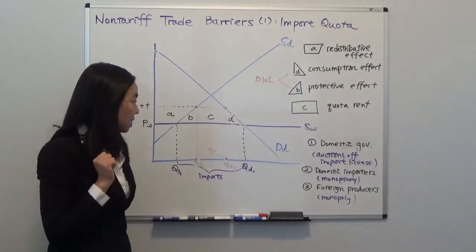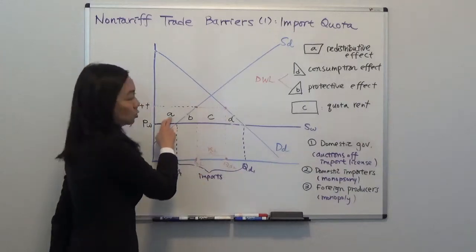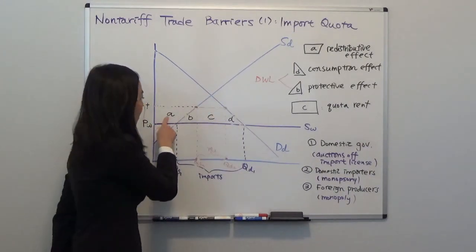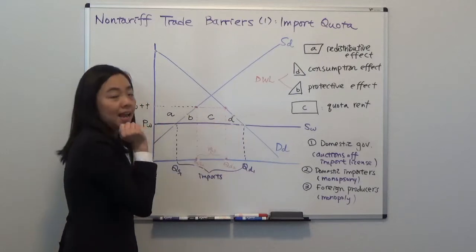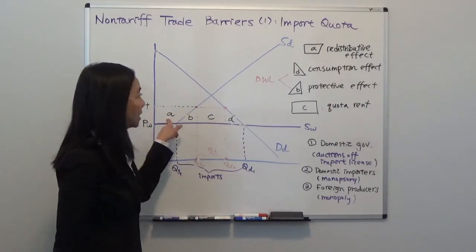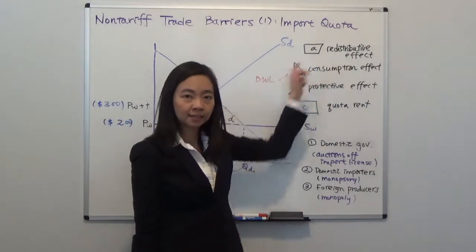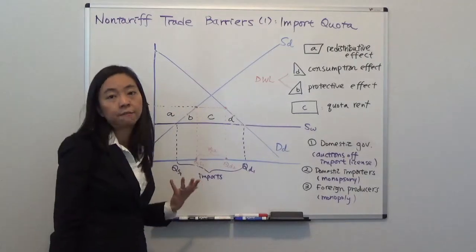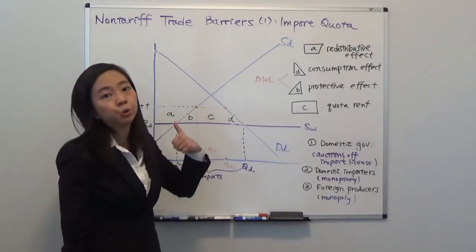And we can cut the lost consumer surplus into four pieces, A, B, C, and D. And you can see A is redistributive effect that is being redistributed from consumer surplus to producer surplus.